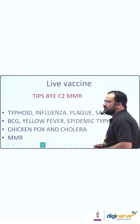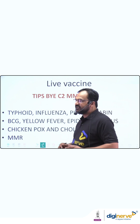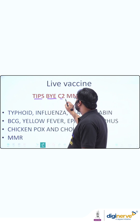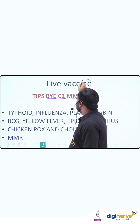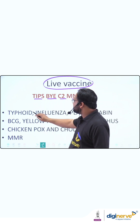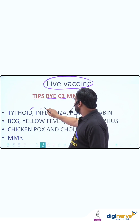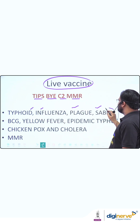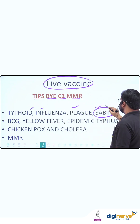Here is a mnemonic: TIPS by C2 MMR for live vaccines. TIPS stands for Typhoid, Influenza, Plague, and Sabin — Sabin being the oral polio vaccine.